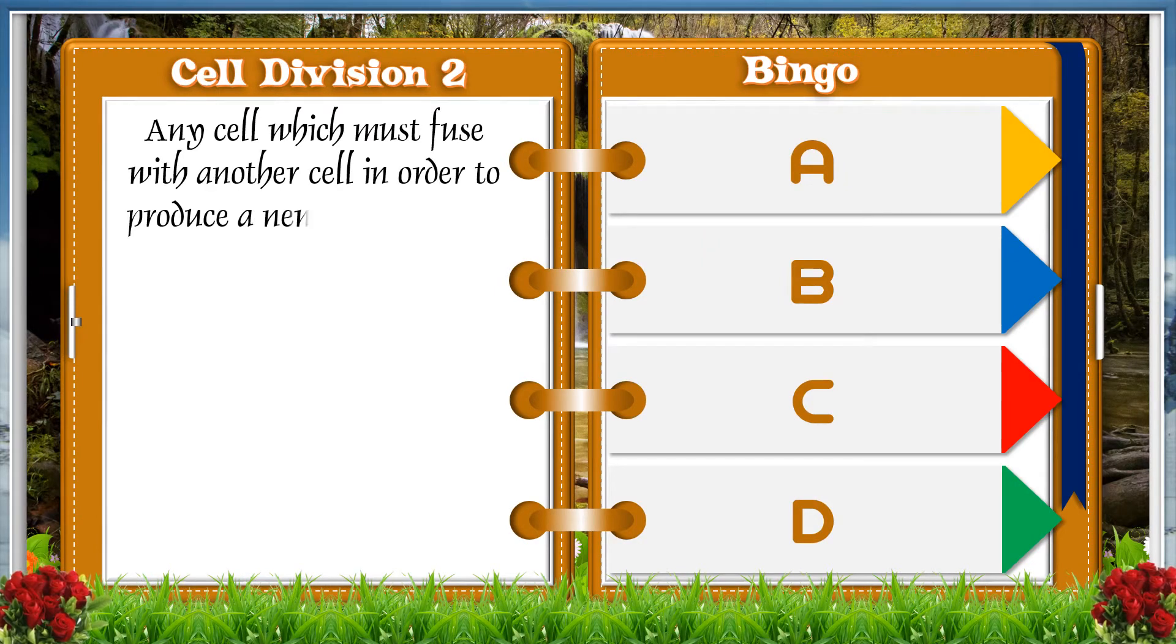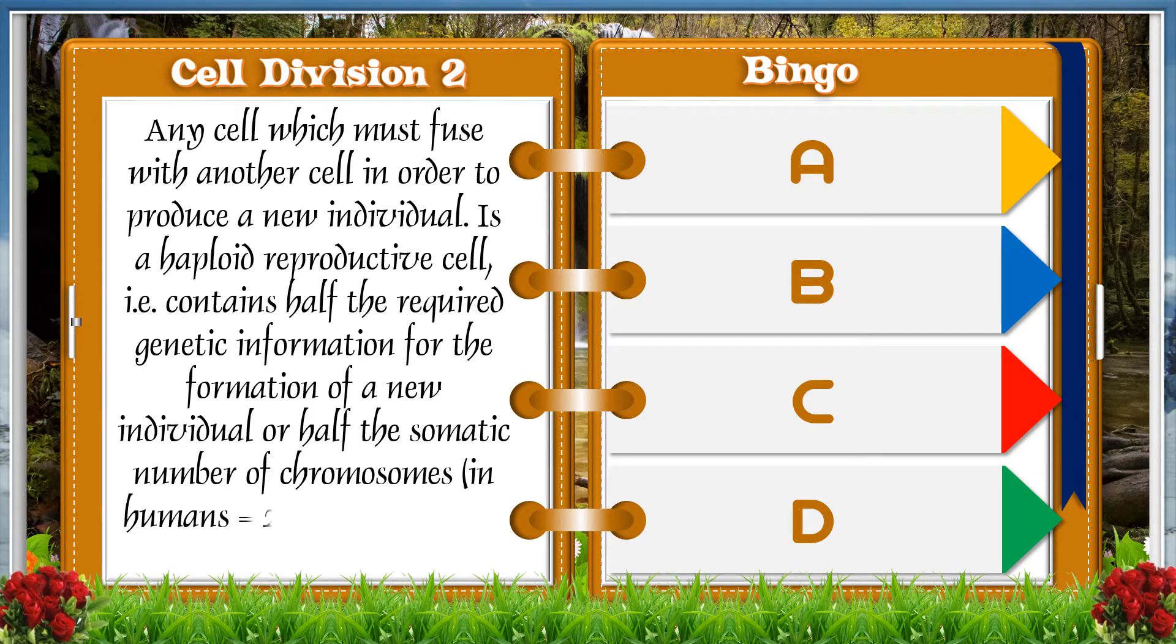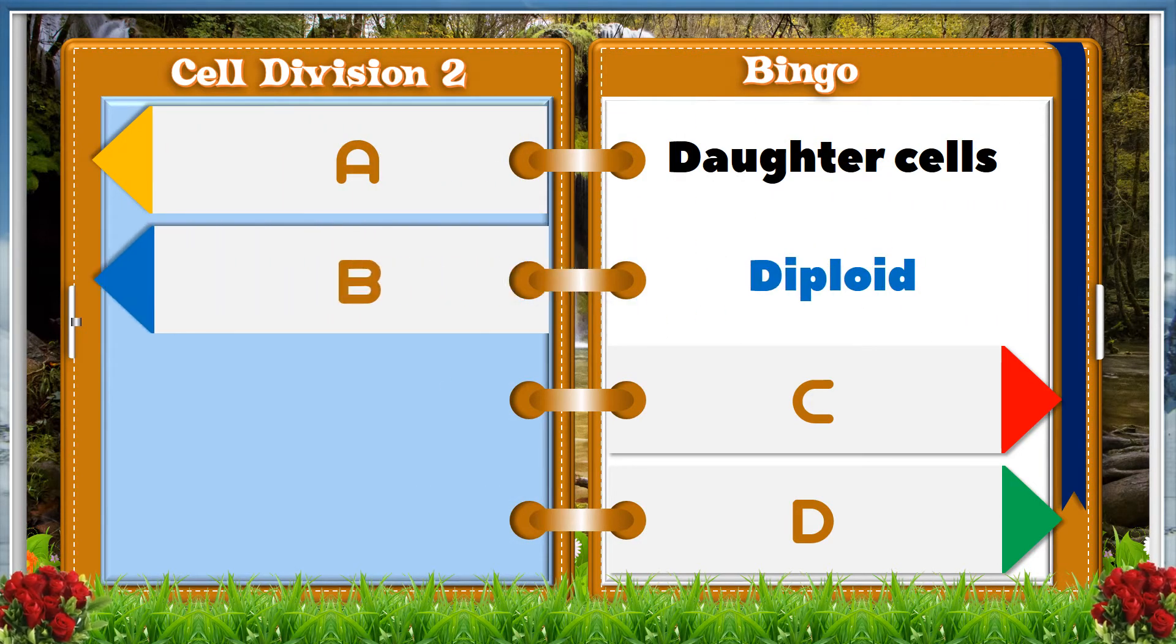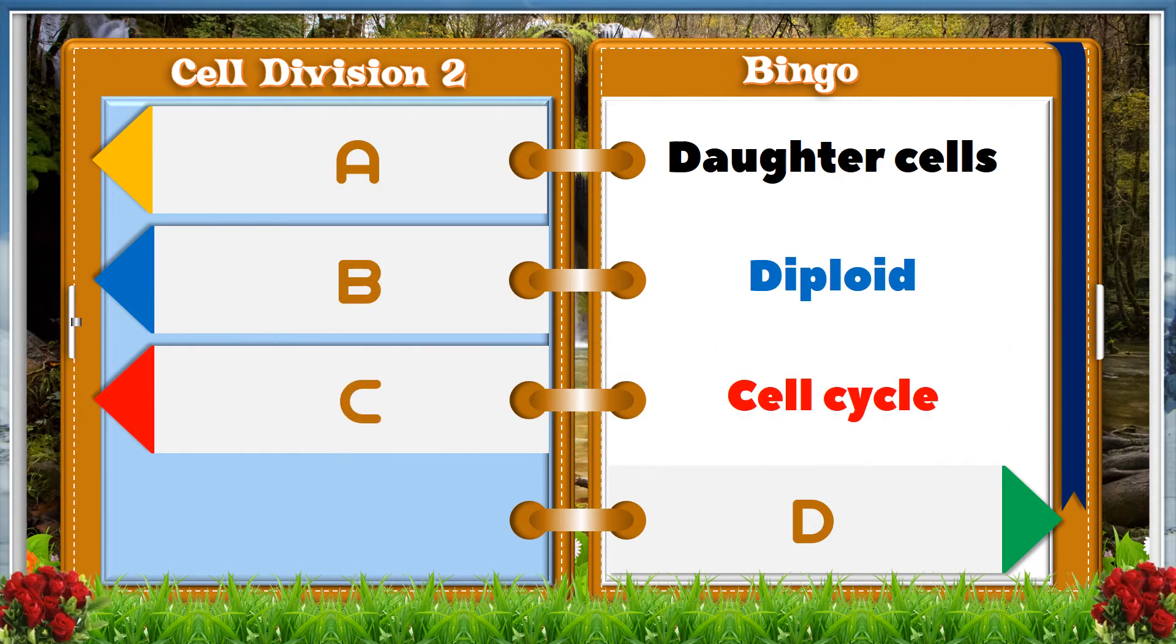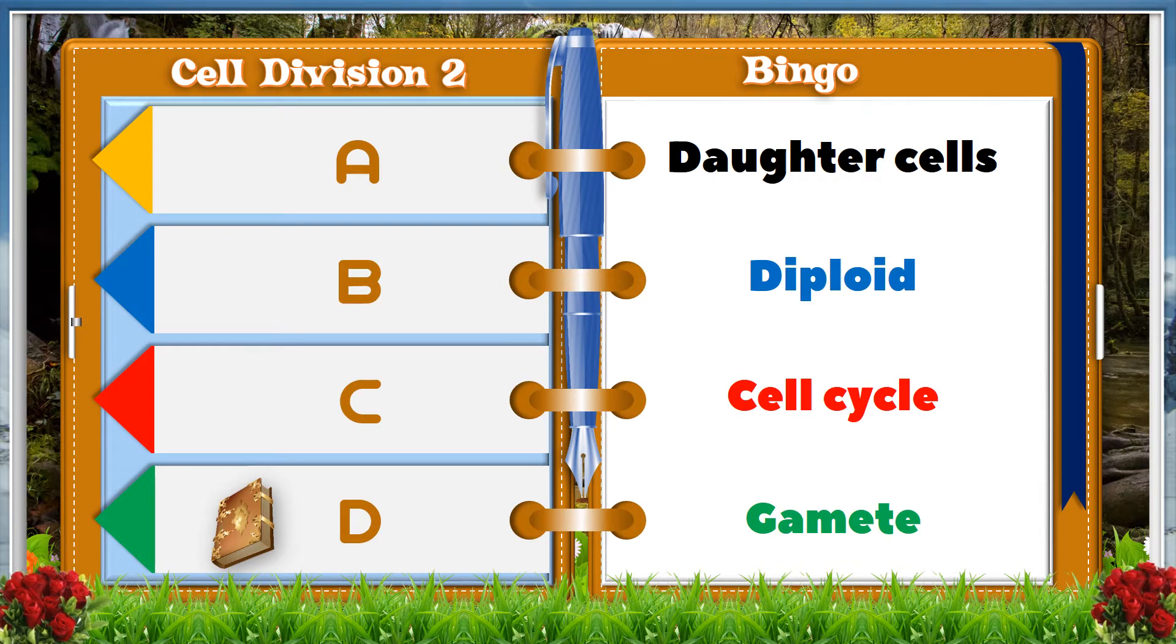Any cell which must fuse with another cell in order to produce a new individual is a haploid reproductive cell, i.e., contains half the required genetic information for the formation of a new individual or half the somatic number of chromosomes. In humans equals 23, e.g., sperm cell, egg. A: daughter cells, B: diploid, C: cell cycle, D: gamete. And the answer is D, gamete.